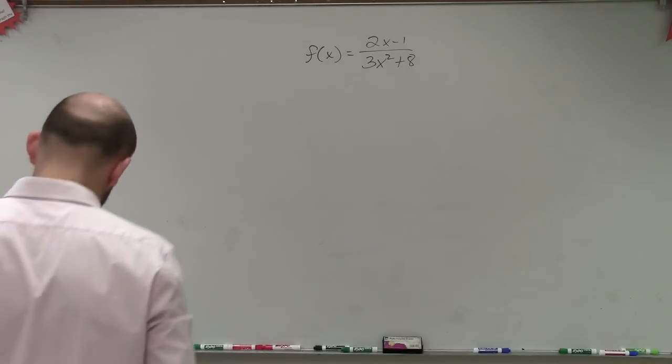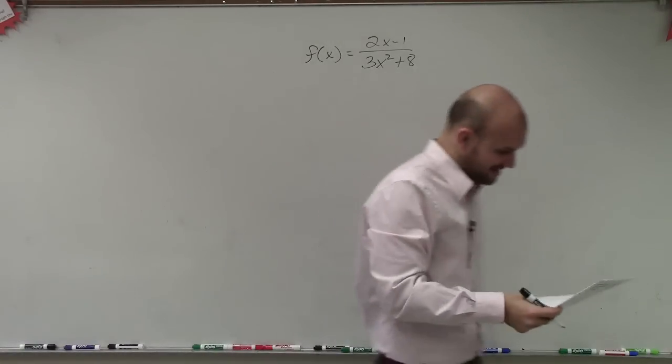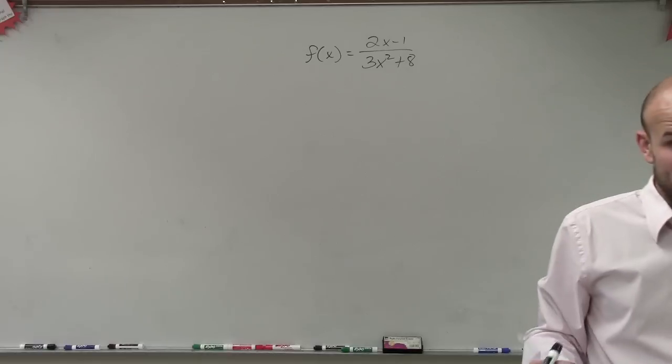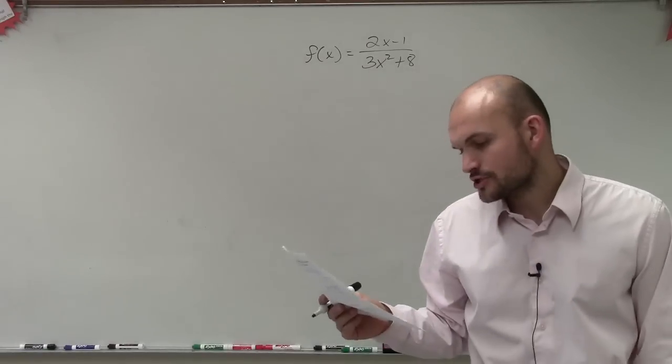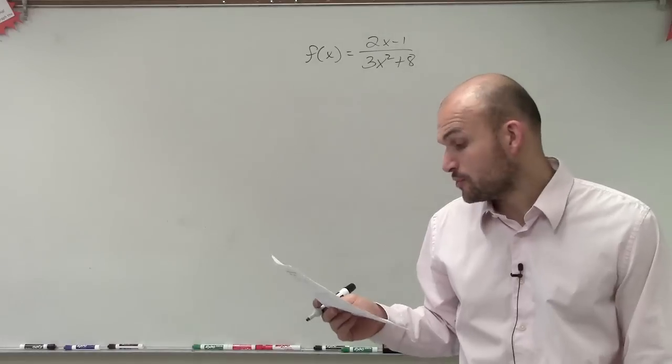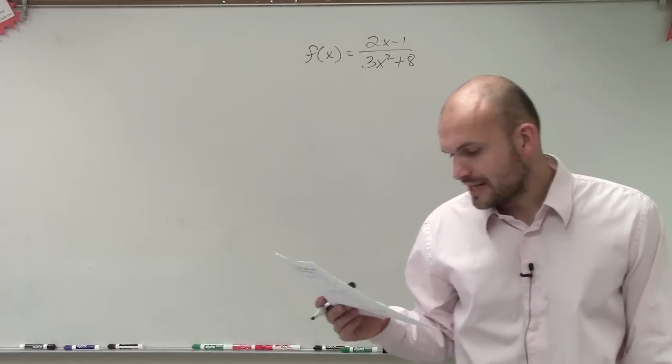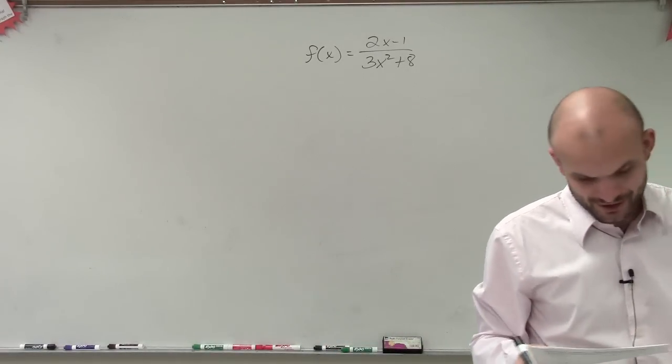Alright, so let's check this out then. So what they're asking us for this one is they're not asking us to graph it, but all they're asking us to do is find the removable discontinuities, non-removable discontinuities, our vertical asymptote, our horizontal asymptote, our domain, and our range.